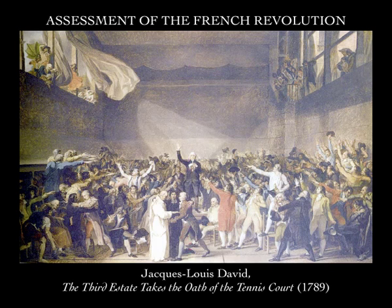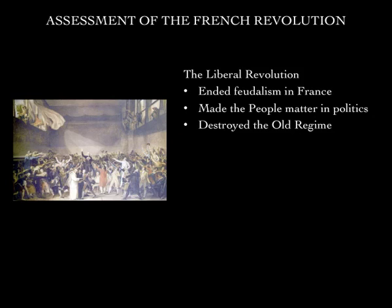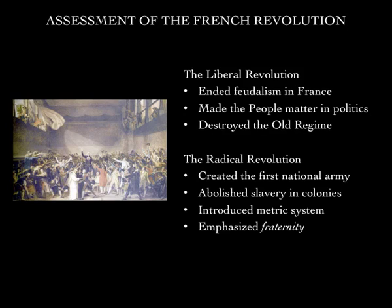The French Revolution occurred in phases, so we need to consider it in phases. The first period, the Liberal Revolution from 1789 through 1791, accomplished a number of things. It ended feudalism in France, brought the masses into the forefront of politics for the first time in French history, and the pre-revolutionary order was never re-established — the old regime was destroyed.